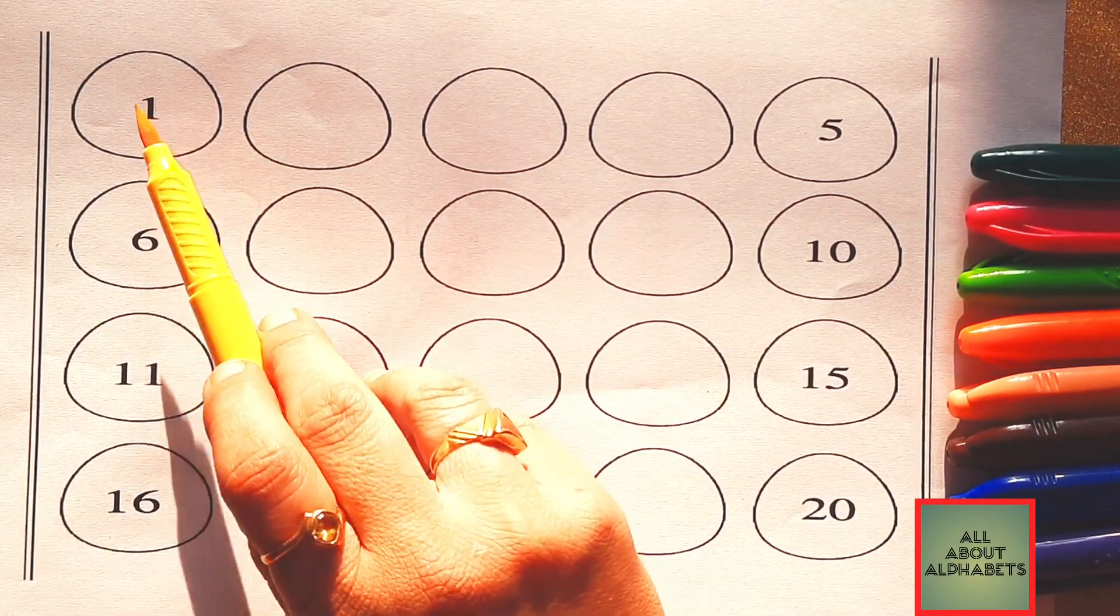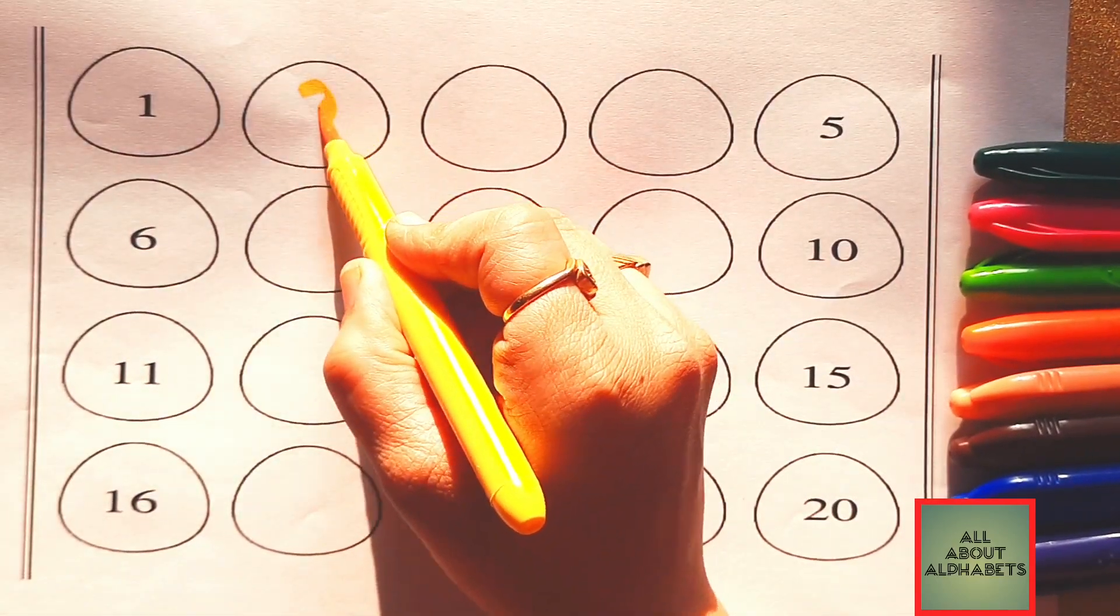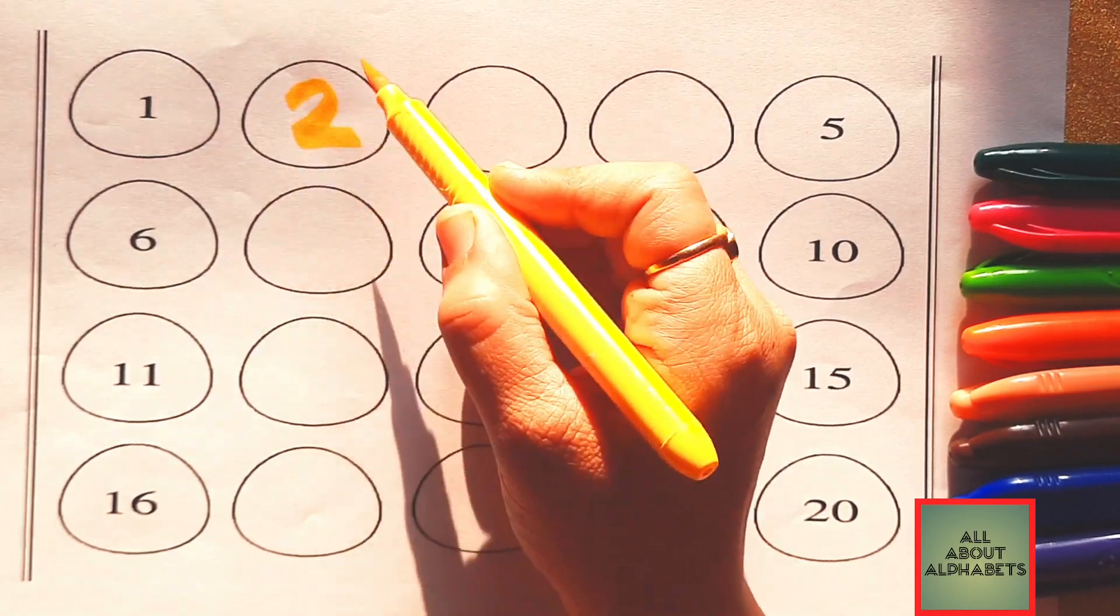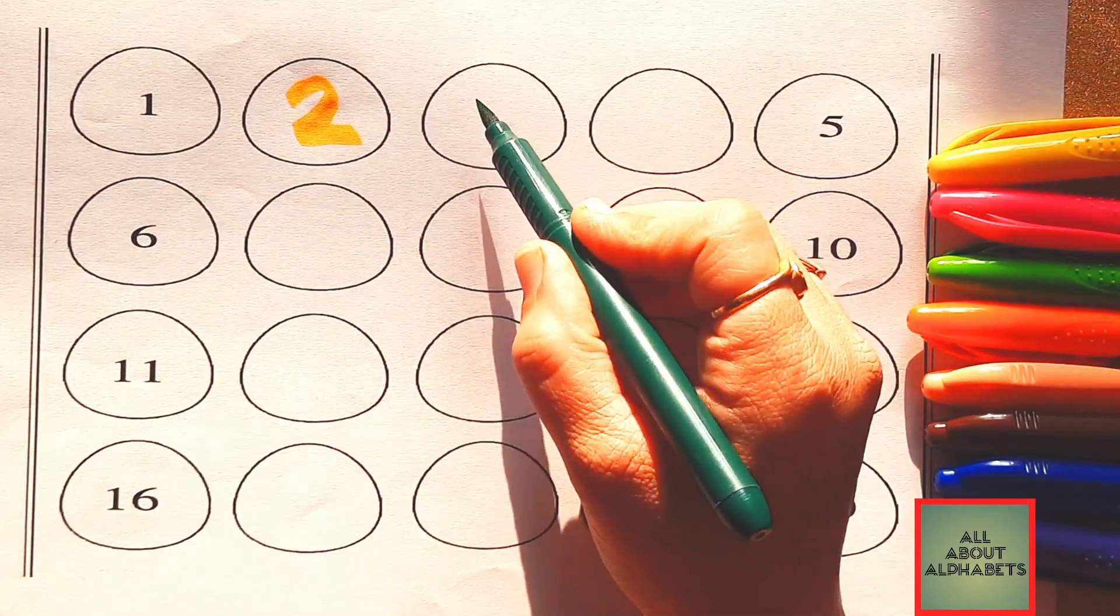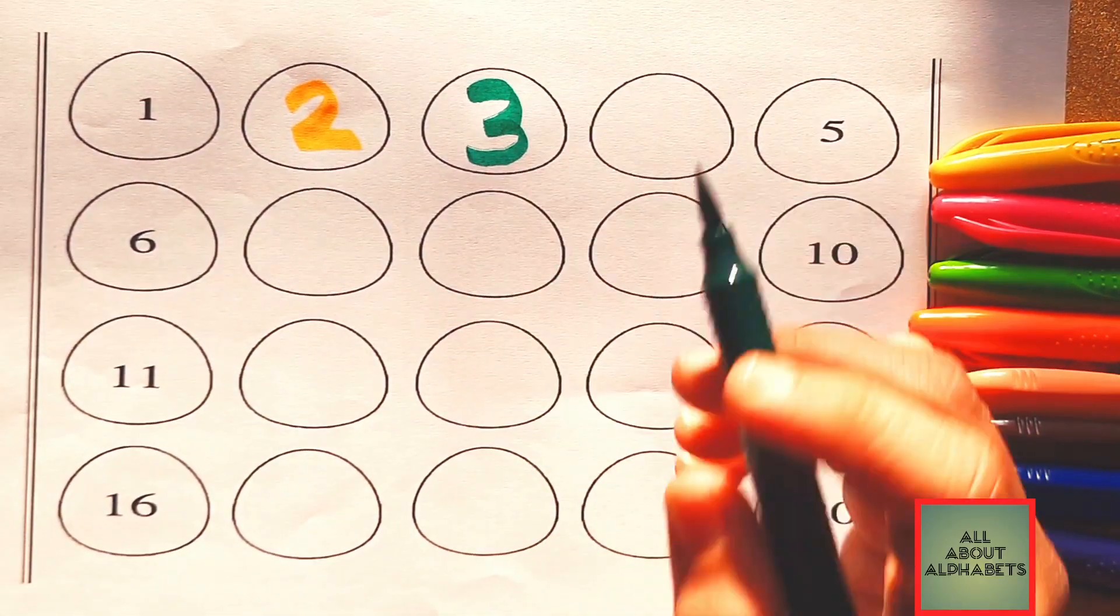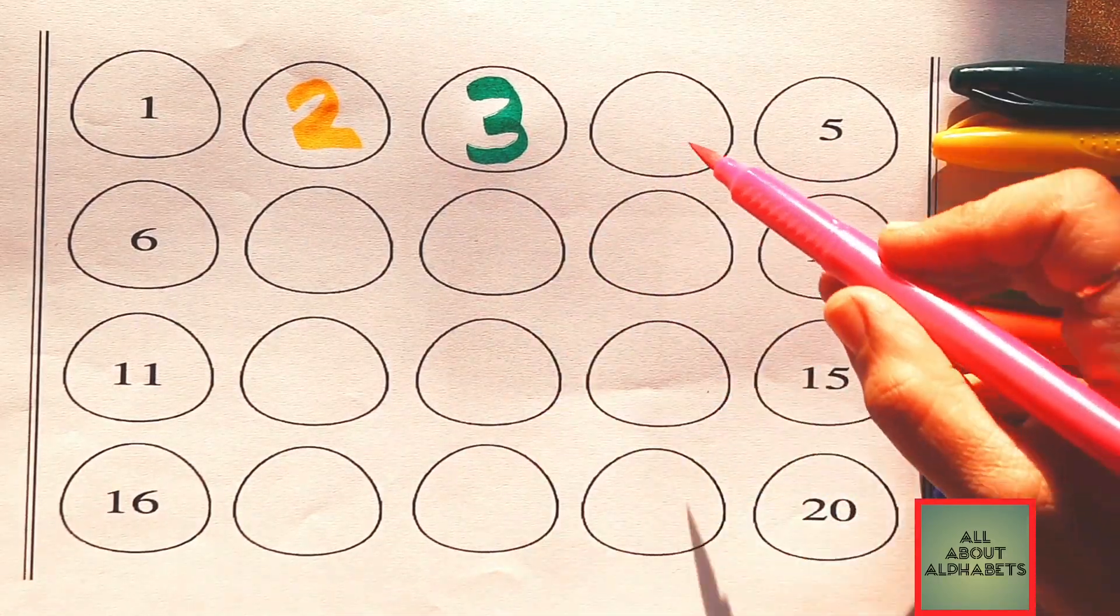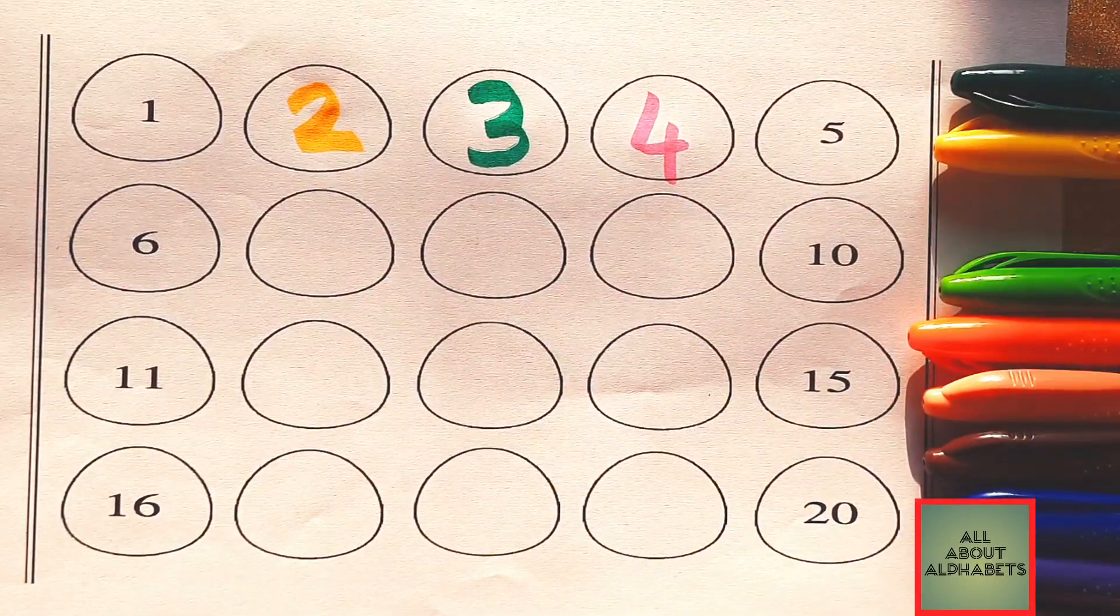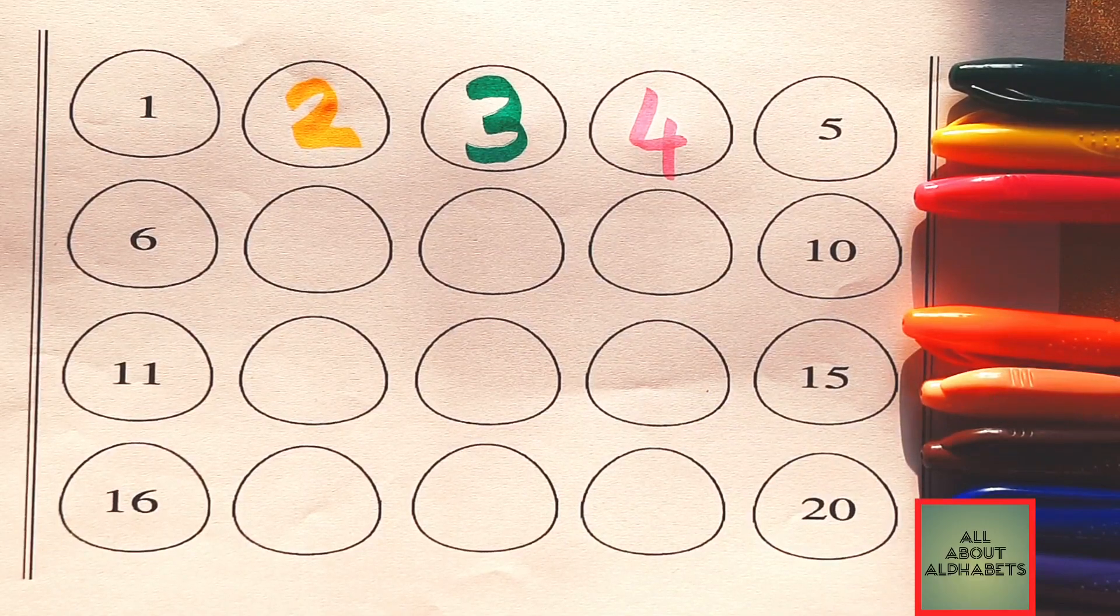Number 1. Which number comes after 1? 2. Number 2. Which number comes after 2? Yes! 3. Very good! Number 3. Which number comes after 3? 4. Very good! Number 4. Next is 5. Number 5.